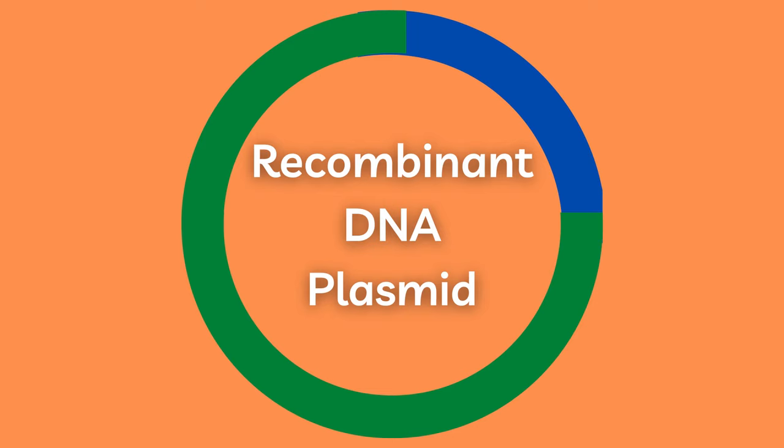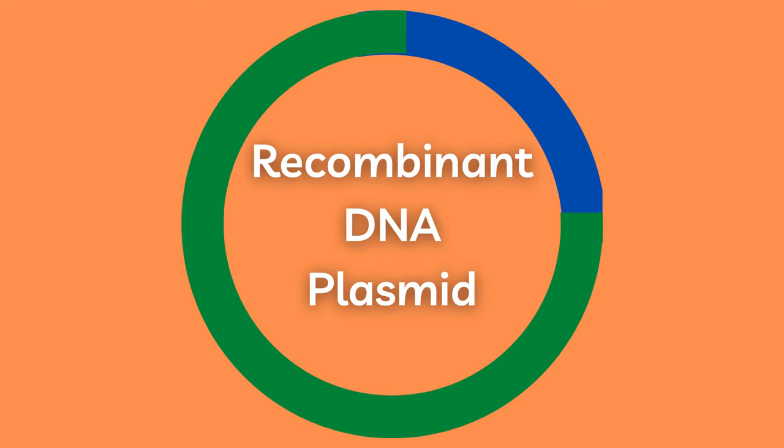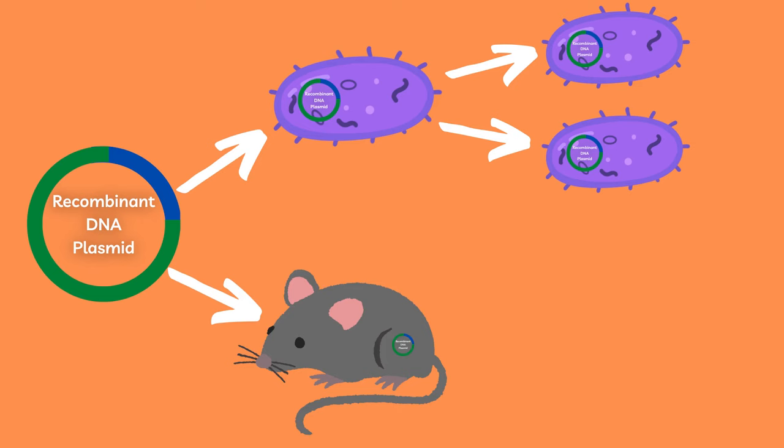What we are left with is a recombinant DNA plasmid, which can be inserted back into a bacterial cell for cloning, or into a mammalian cell for transfection.